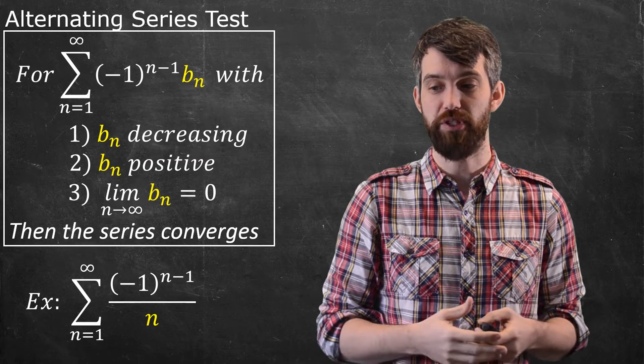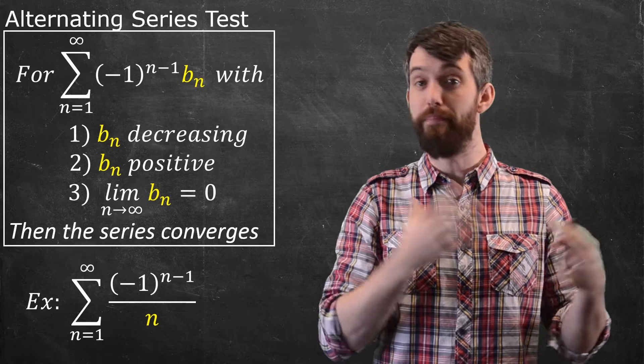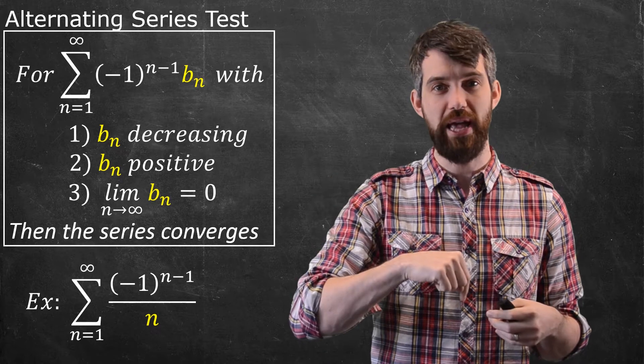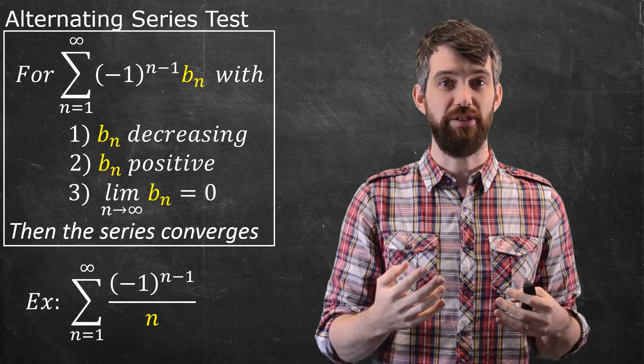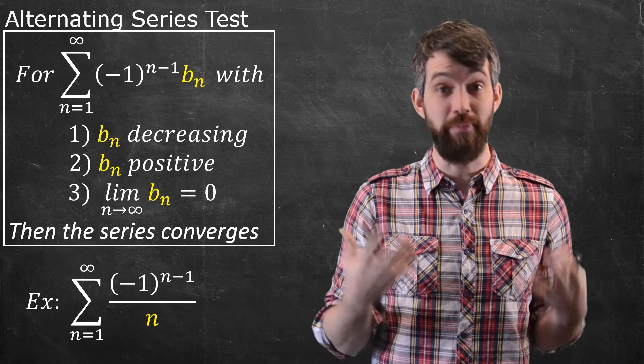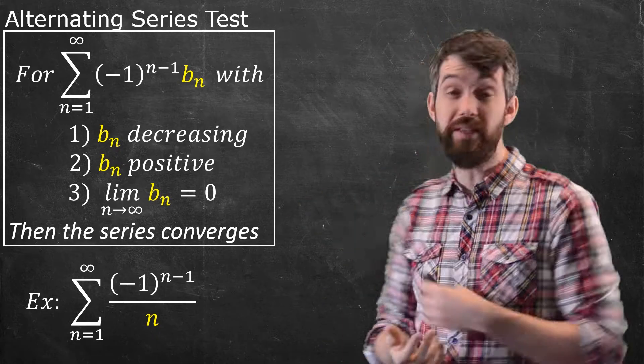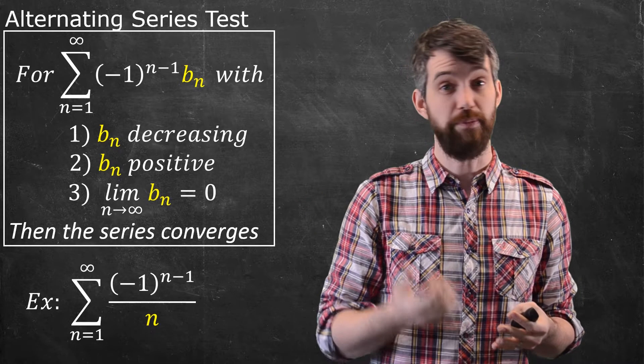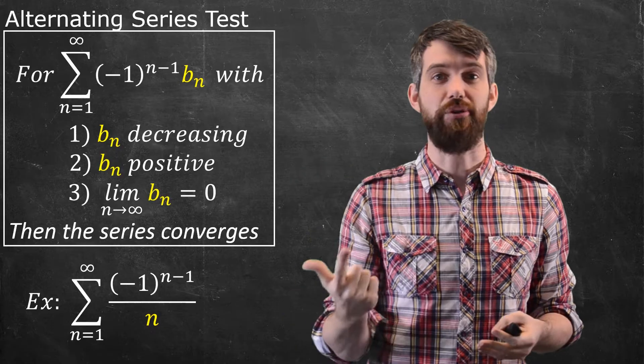Let's check this specific example: (-1)^(n-1) divided by n. For this, b_n = 1/n, which is positive and decreasing.